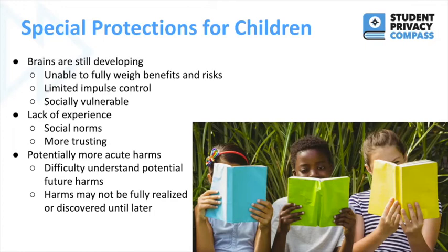Children and adolescents have developing brains, which means they're not fully able to weigh the benefits and risks. They have limited impulse control and are much more susceptible to peer pressure. Lack of experience means they're still learning social norms and also tend to be more trusting of others. There's also the potential for more acute harms because it's difficult to understand future harms, and also because these harms may not be fully realized until much later.